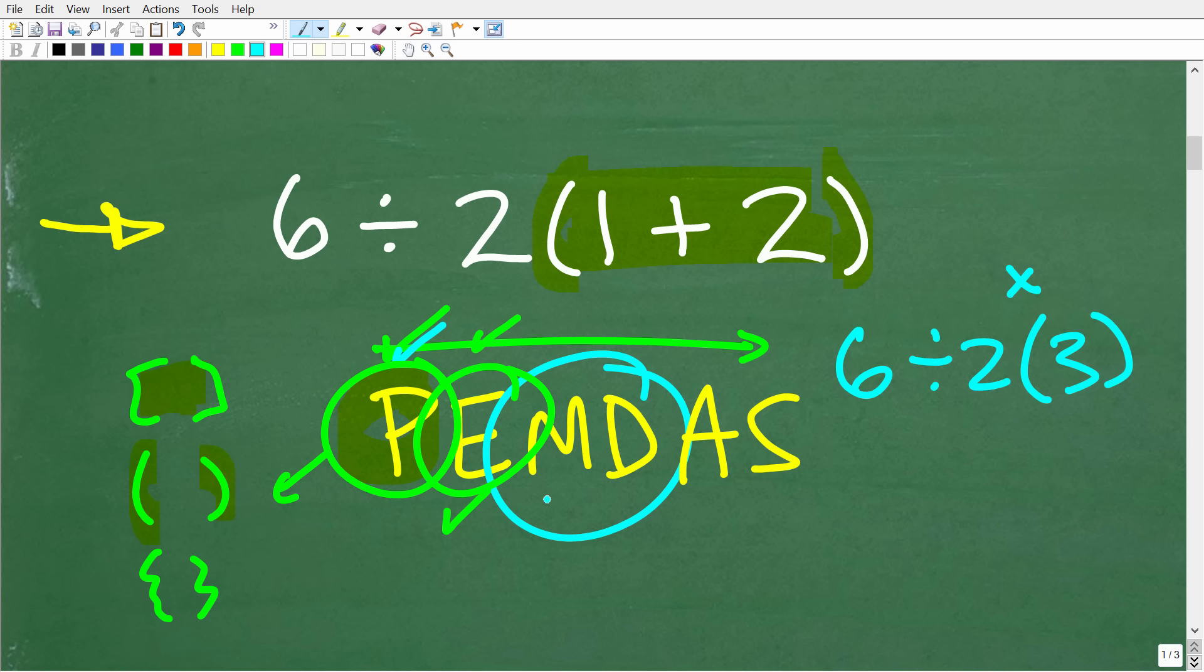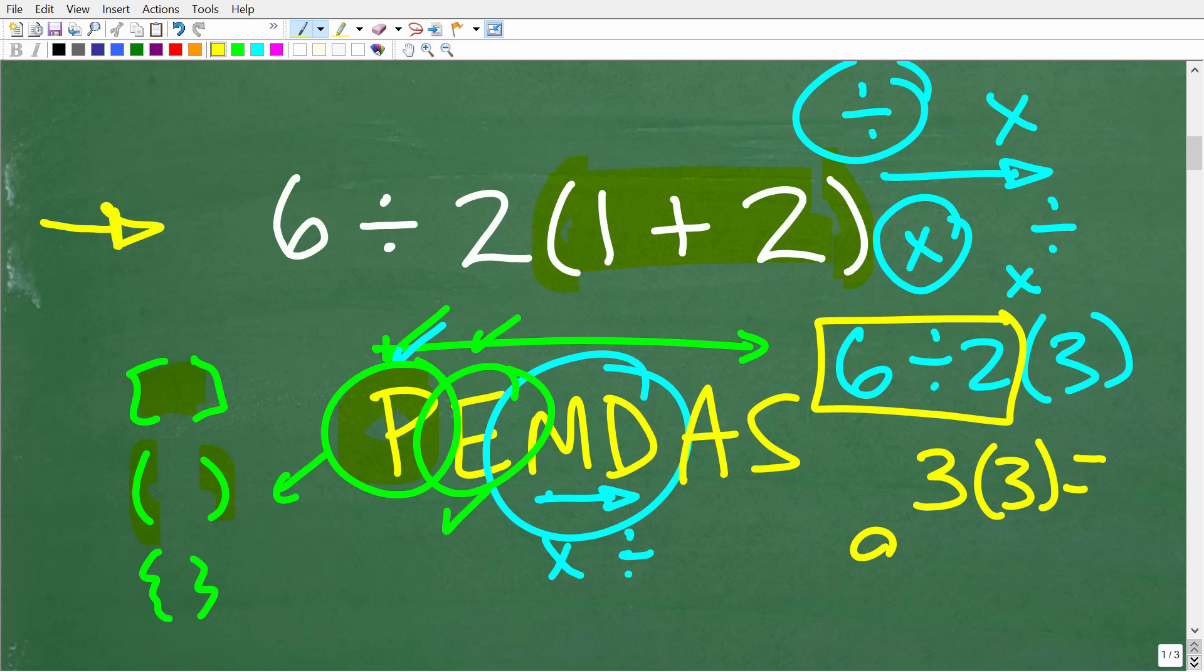But let's go ahead and understand exactly how to take the next step here. So if your problem has multiplication and division what you're going to do is whatever you see first from left to right. So in other words if you have division then multiplication from left to right you're going to do division first. If you have multiplication then division you're going to do multiplication first. So it really depends on what you see from left to right. And you can see right here what we have first from left to right is division. So that's why we have to take that 6 divided by 2 that of course is 3 and we're left with 3 times 3. So the correct answer is 9.